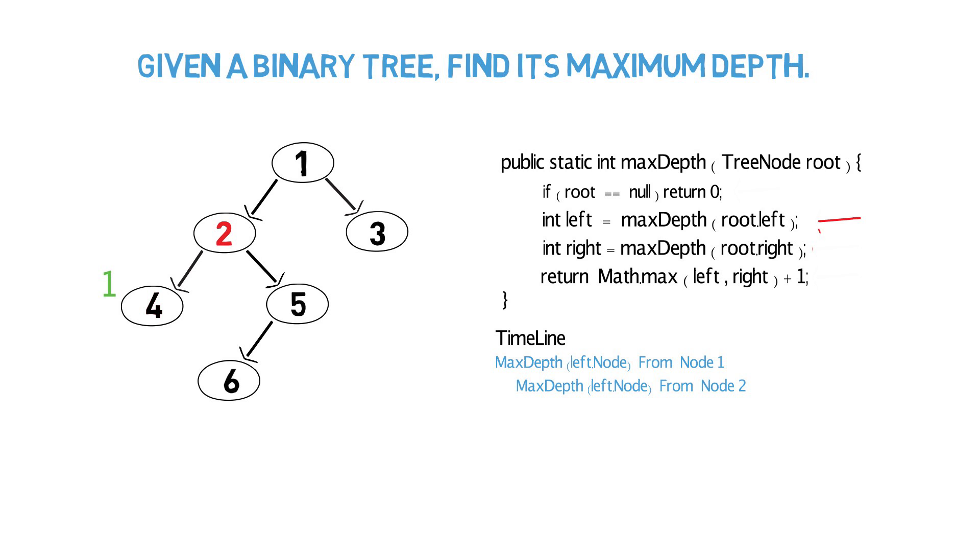So this basically shows the depth to the left of node 2 is 1 because there is only one node below it. Since we have that, we need to do the same thing with node 2's right. We pass in node 2's right and check if it is equal to null. Since it points to node 5, we continue on with node 5.